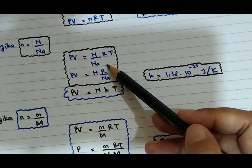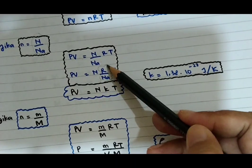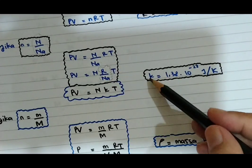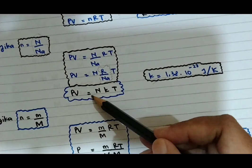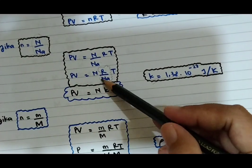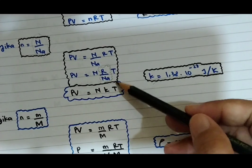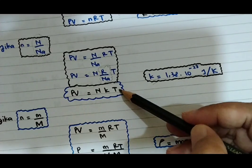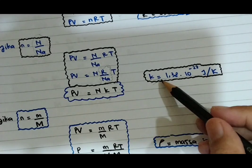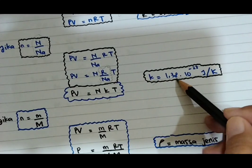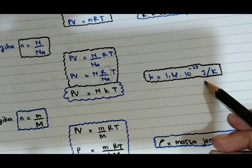Ternyata R per N_A ini merupakan tetapan umum Boltzmann. Jadi dari sini PV sama dengan N, dengan pengganti R/N_A diubah menjadi k, sehingga PV sama dengan NkT. K ini disepakati sebagai tetapan Boltzmann yaitu sebesar 1,38 × 10⁻²³ Joule per Kelvin.